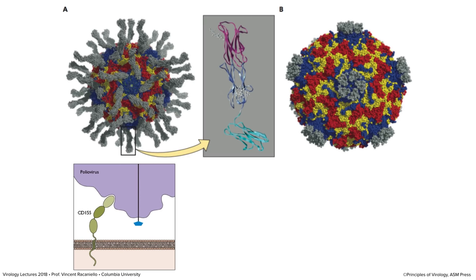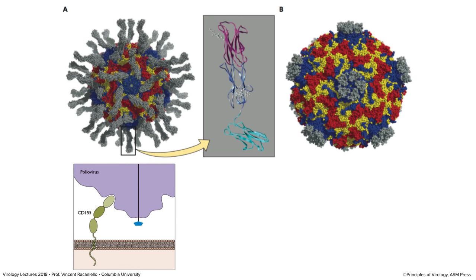Some viruses have a groove where the receptor fits, like poliovirus. But rhinovirus, a very similar virus in the same family, also has a groove around the five-fold axis, yet its receptor — low-density lipoprotein receptor, LDLR — doesn't bind in the groove. It sits on the plateau at the five-fold axis. The moral: don't think lock and key all the time. Sometimes the receptor just binds on a flat surface. Since then, we've solved structures of many viruses and found receptors can interact in grooves, on flat surfaces, in loops, and so forth.